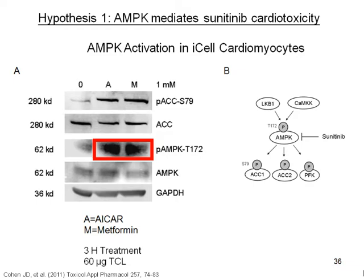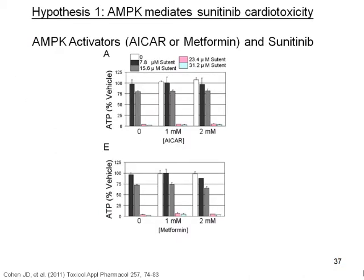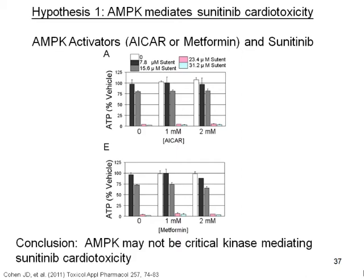In order to test whether AMPK activation can attenuate sunitinib-mediated cardiotoxicity, I pre-treated the cells with potent activators AICAR and metformin for three hours, and confirmed by Western blot that I can upregulate phosphorylation of AMPK as well as its downstream target ACC. I pre-treated with both 1 and 2 millimolar AICAR as well as metformin, then treated with a dose response of 0 to 31 micromolar of sunitinib. In an ATP depletion assay, I did not see any attenuation of sunitinib cardiotoxicity. Therefore, I concluded that AMPK may not be a critical kinase mediating sunitinib cardiotoxicity, though that alone is not sufficient.